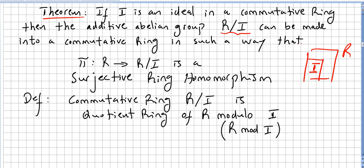In such a way that the mapping pi from R to R/I is a surjective ring homomorphism. So the quotient ring is R modulo I.